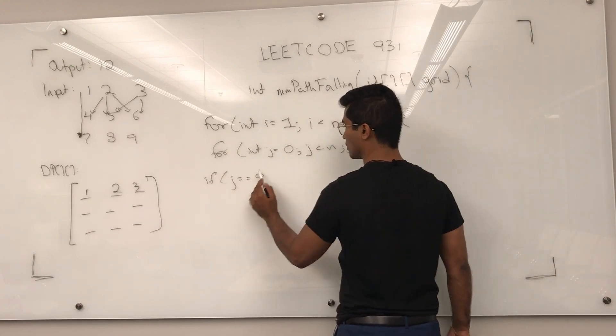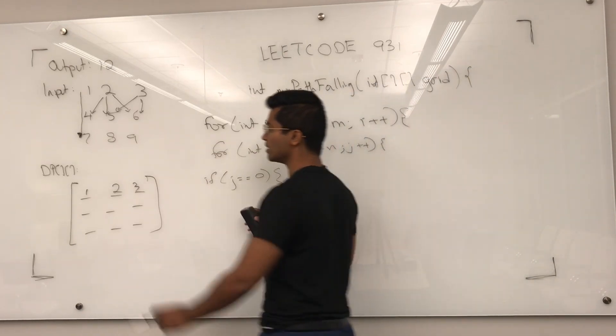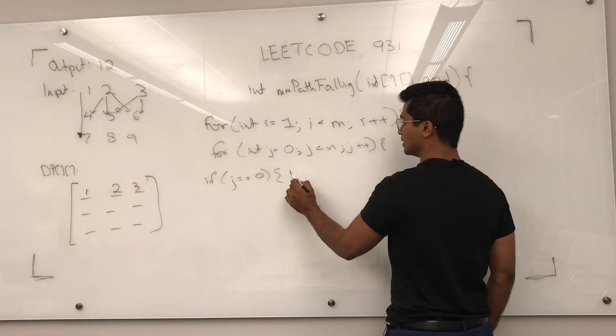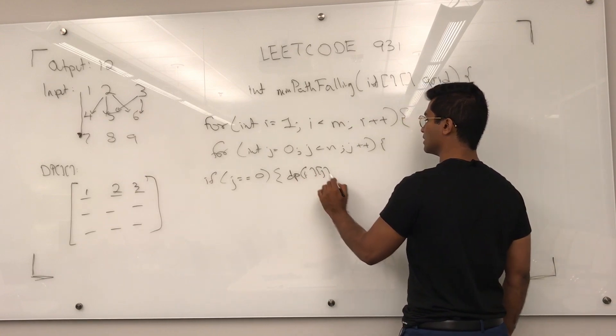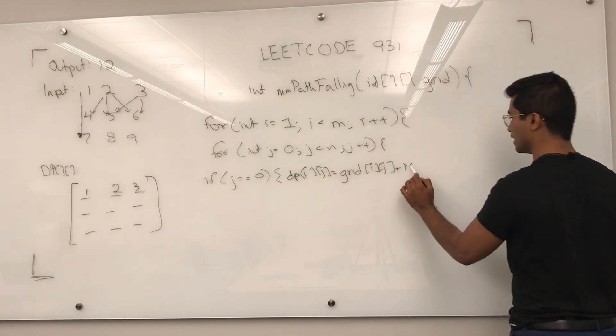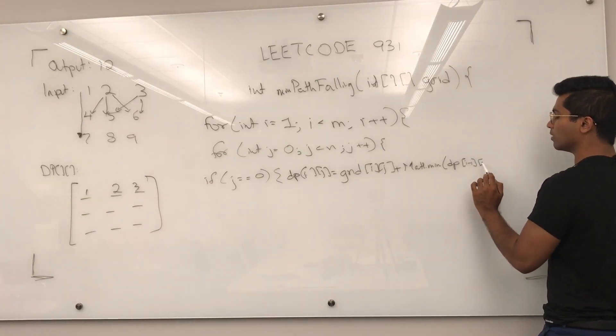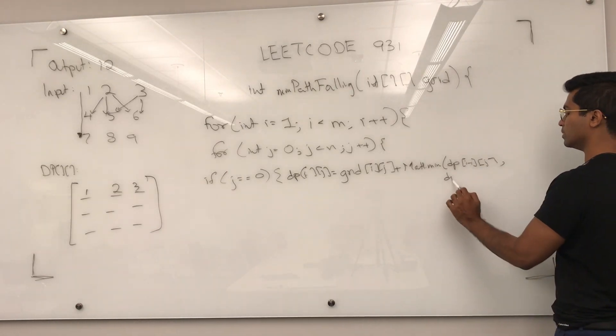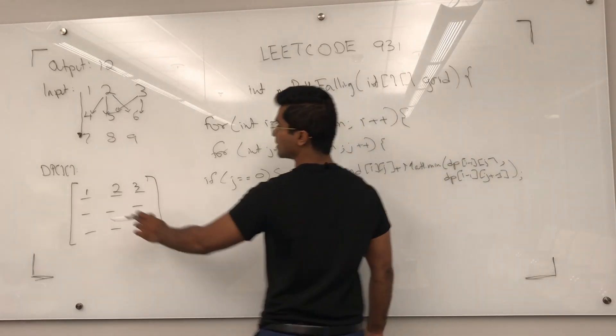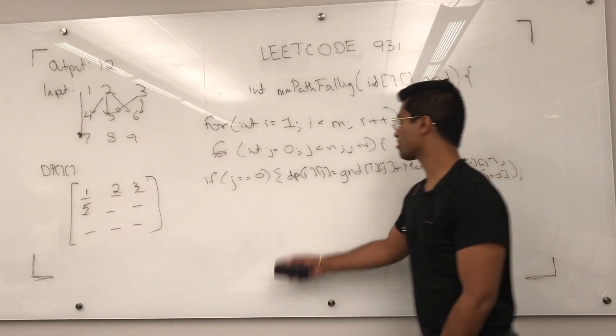If j is equal to 0, which means if I'm currently on this one, dp is going to be the minimum of these two plus itself. dp[i][j] is going to be grid[i][j] plus Math.min of dp[i-1][j], dp[i-1][j+1]. What this means is this guy is going to be 4 plus either 1 or 4 plus 2. This guy is going to be 5.